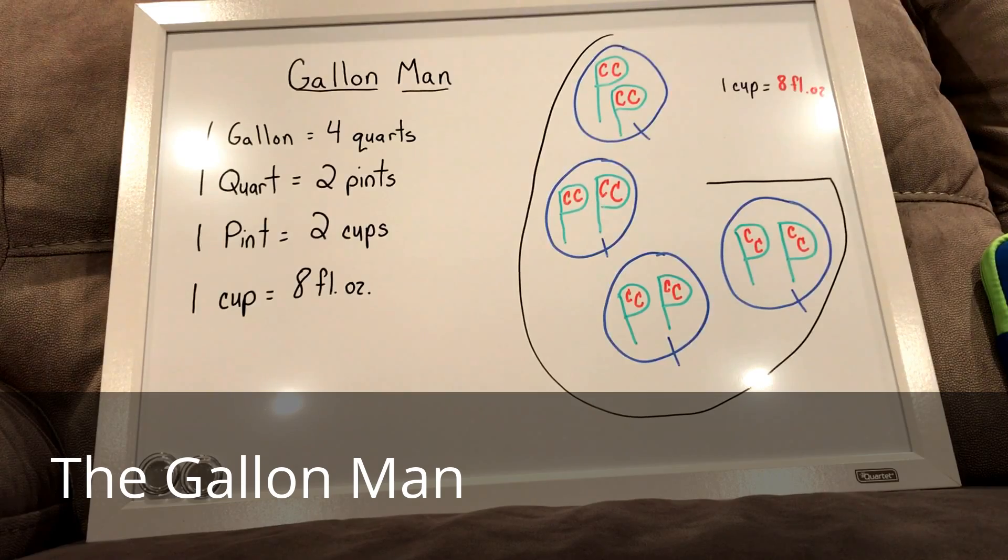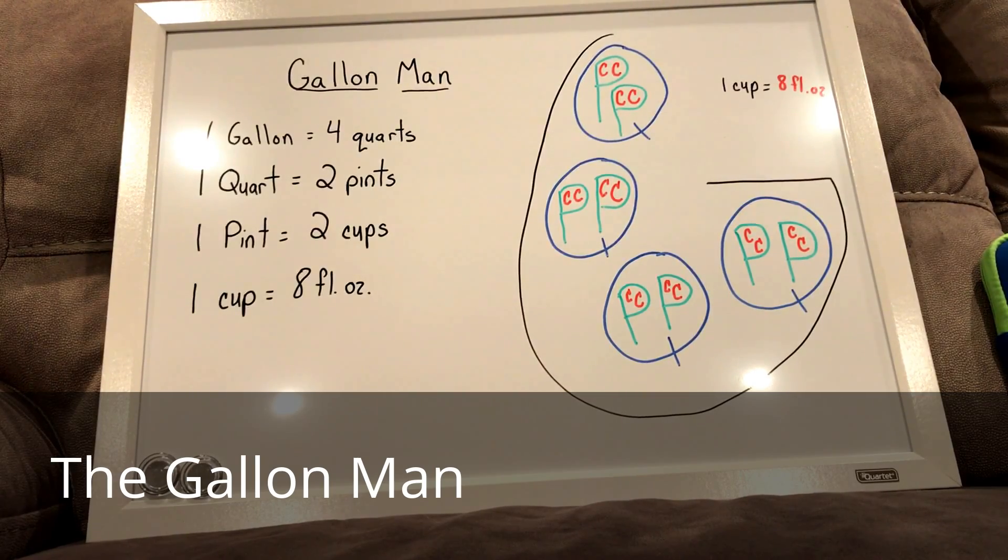So there are 16 cups inside of one gallon, you would do 16 times eight, which equals, well, we could do 10 times eight is 80, and six times eight is 48. So 80 and 48 is 128 fluid ounces in one gallon.